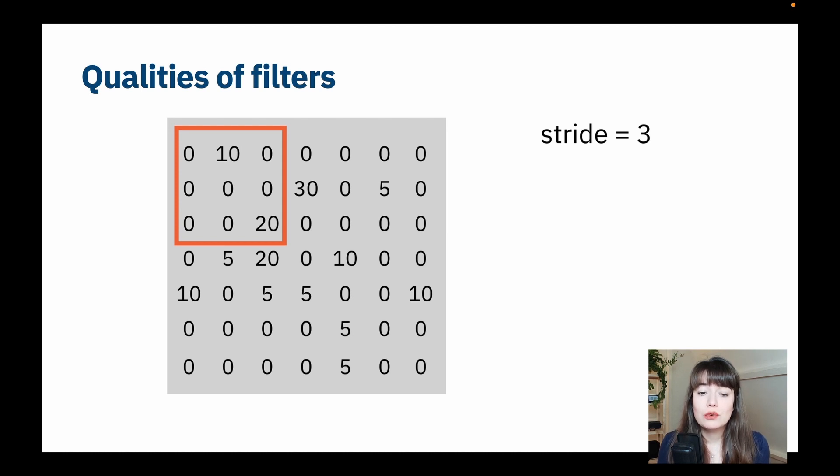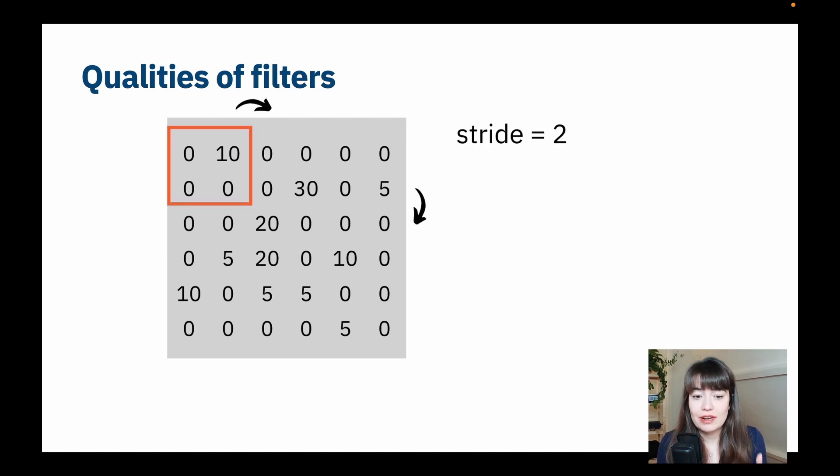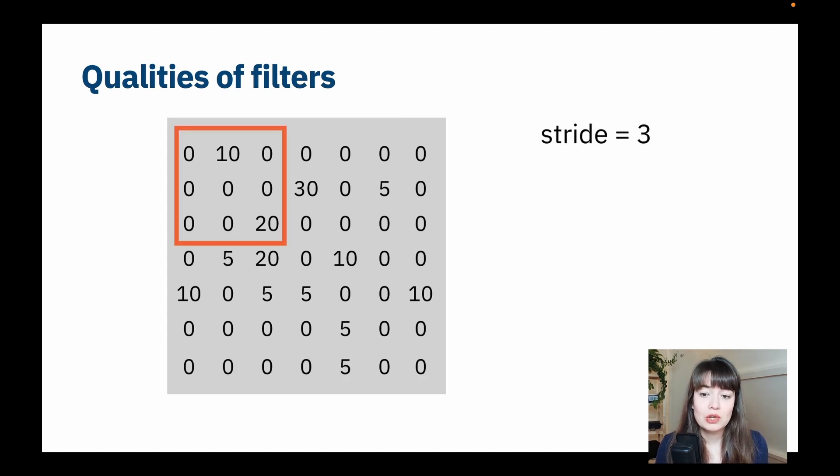But of course, you might not always fit perfectly. So, right, we have 6 pixels side by side here, and our stride is 2, and we're fitting perfectly in just one width of the image. But what if you don't fit the perfect width of the image? So let's say we have a 7 by 7 pixel image, and we set our stride to be 3, and our filter size is also 3.